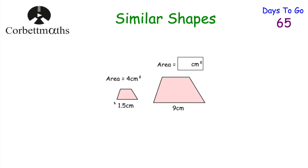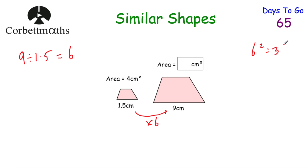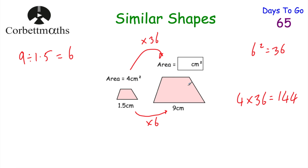Here's a question for you to try. We've got a small trapezium and a larger trapezium — can you work out the area of the larger one? We need to find how many times bigger the sides are, so we do 9 ÷ 1.5 = 6; the sides are 6 times bigger. The area scale factor is 6 squared = 36, so the area of the bigger one is 36 times larger. Multiplying: 4 × 36 = 144, so the area of the larger trapezium is 144 cm². Well done if you got that.